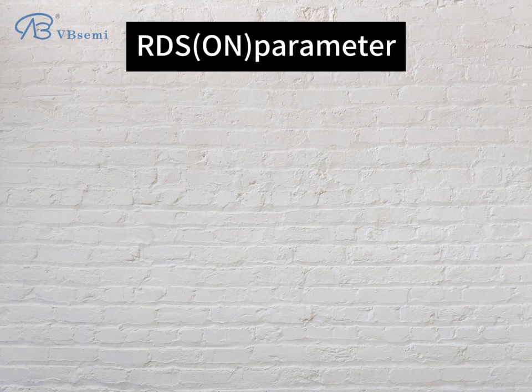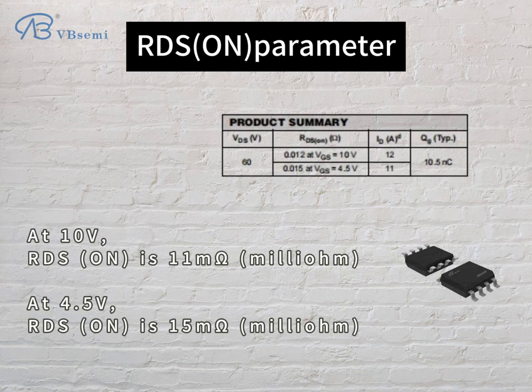RDS-ON parameter: at 10V, RDS-ON is 11 milliohms; at 4.5V, RDS-ON is 15 milliohms.